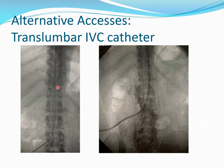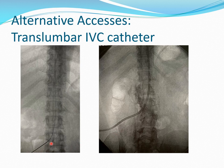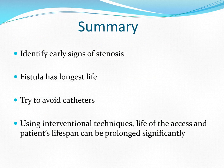Alternative accesses: when a patient has occluded central veins and occluded bilateral femoral veins, you may have to put a catheter in the IVC using a trans-lumbar approach. This is done under fluoroscopy or CT guidance — a needle is placed into the IVC, a wire is advanced, and a catheter is threaded over a wire through peel-away sheaths, with the catheter tip secured in the upper portion of the IVC. In summary: identify early signs of stenosis; fistulas have the longest life; try to avoid catheters because of known complication rates and low flow rates; using interventional techniques, the life of the access and the patient's lifespan can be prolonged significantly.